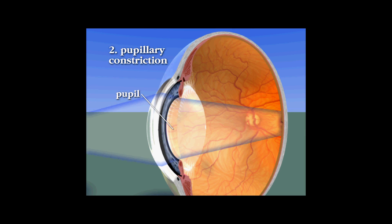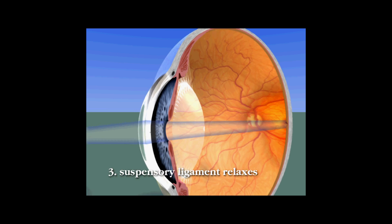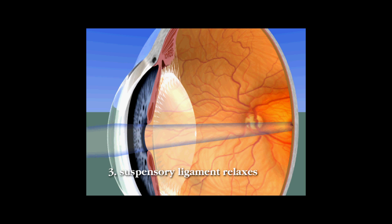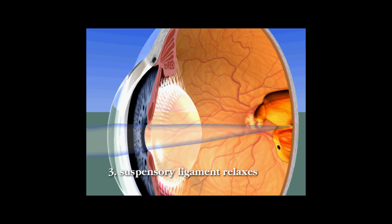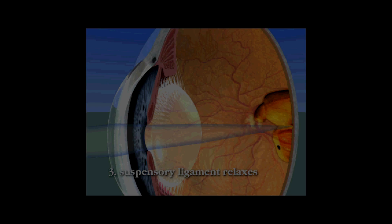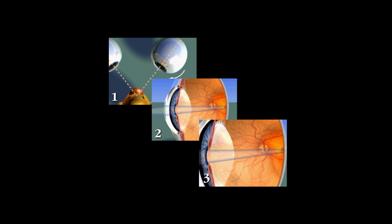Second, the pupil must constrict to restrict the entry of light rays diverging from a near object, since diverging rays cannot be bent enough by the periphery of the lens to make them fall on the fovea. If the pupil were to remain dilated, the image would be blurred. Finally, the shape of the lens must change, increasing its refractive index so that the light rays passing through it converge on the fovea. In distance vision, the lens is pulled at its equator by the suspensory ligament so that it is relatively thin. When the muscles of the ciliary body contract, the tension on the suspensory ligament decreases, allowing the lens to assume a rounder shape, increasing its power to bend light. As a result, the image is focused on the fovea. Combined convergence, pupillary constriction, and rounding of the lens all function to keep an object in focus as it approaches the eye.